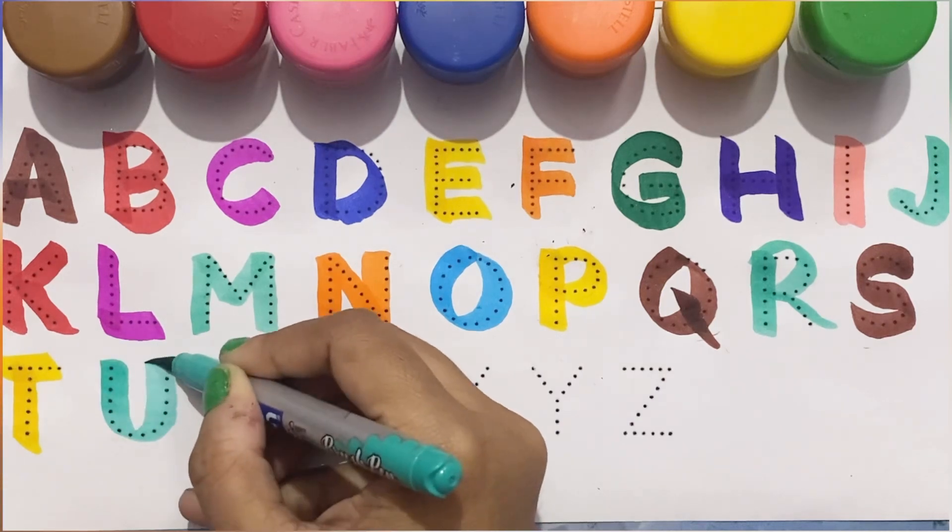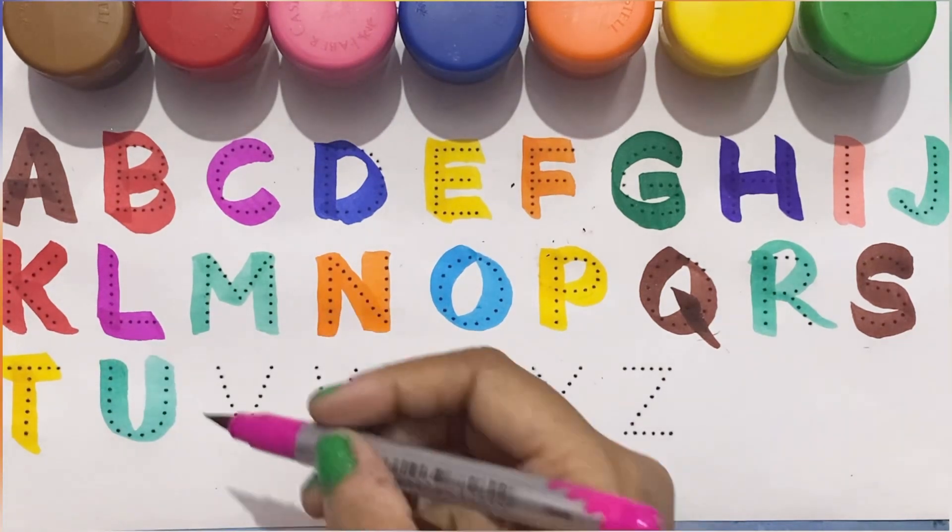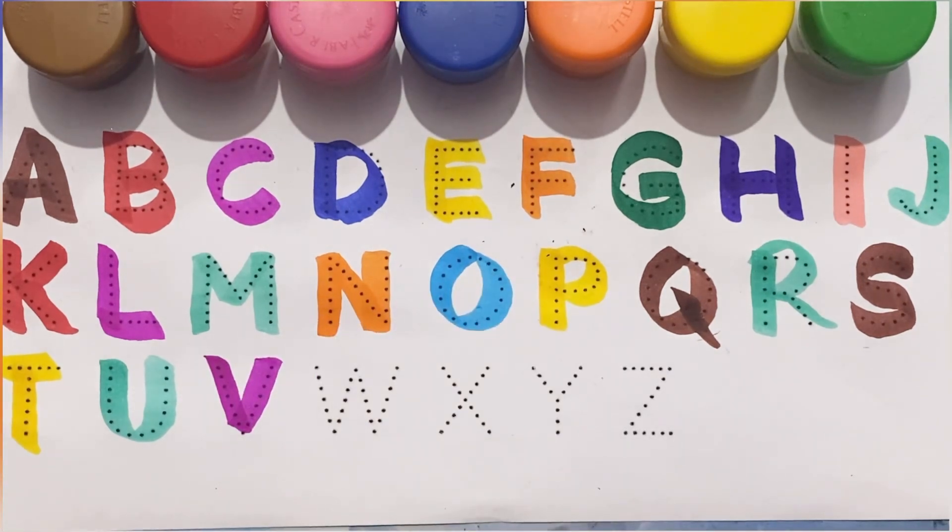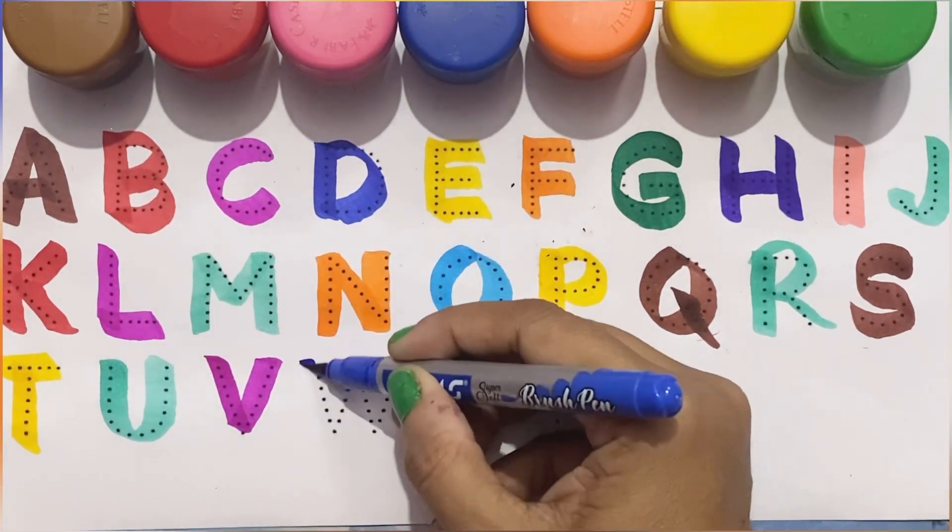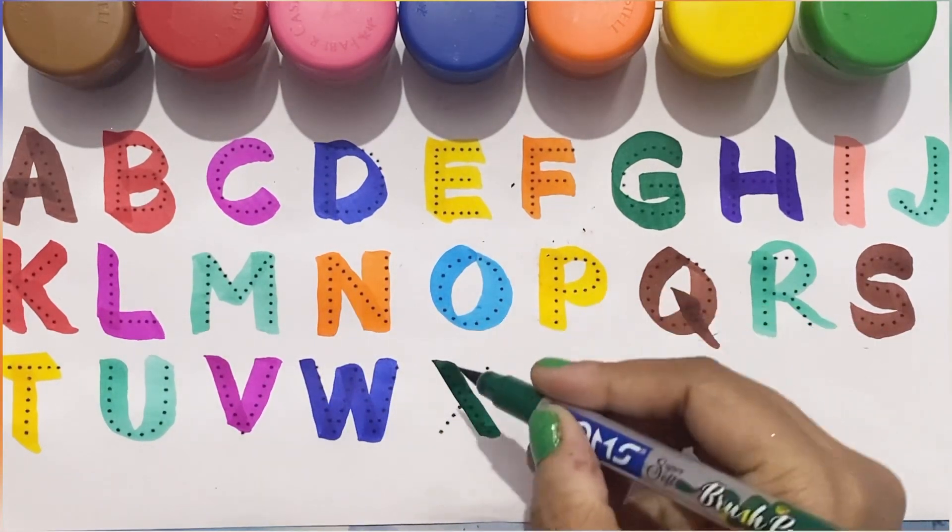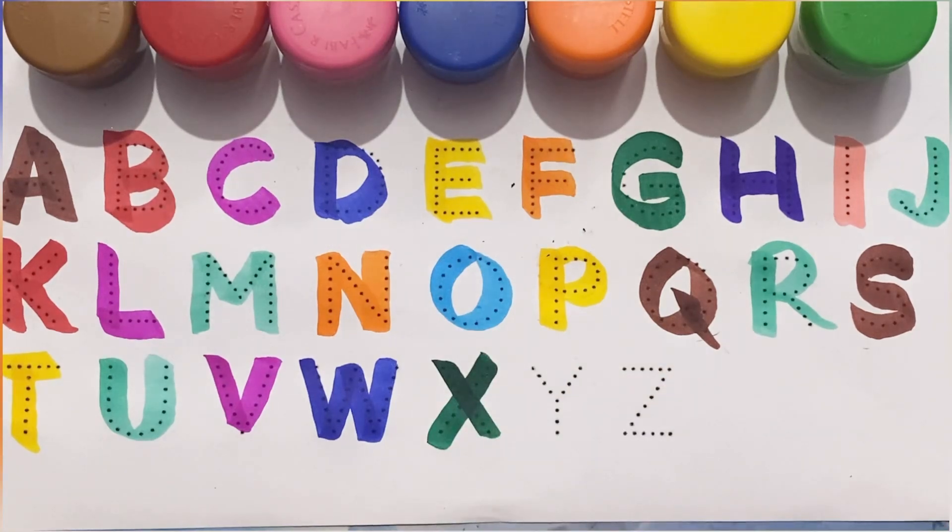Green color, U for umbrella. Pink color, V for run. Blue color, W for watch. Green color, X for x-ray.